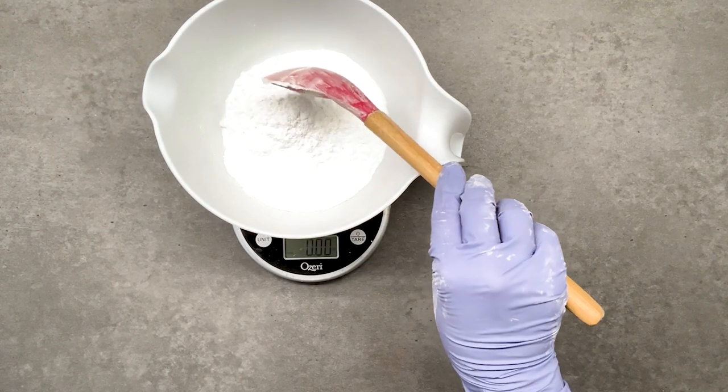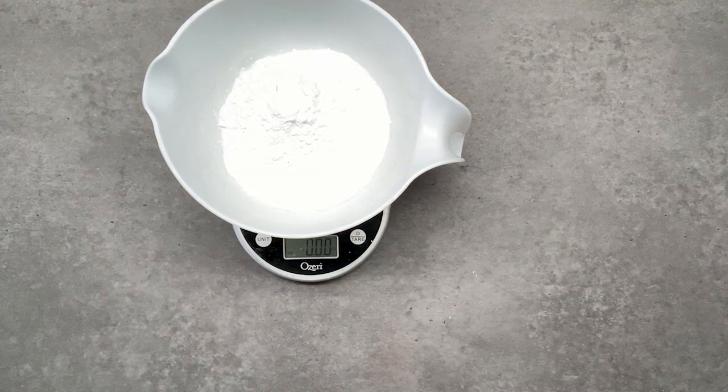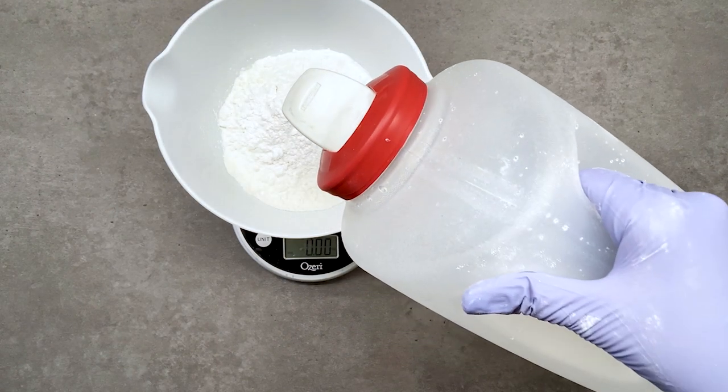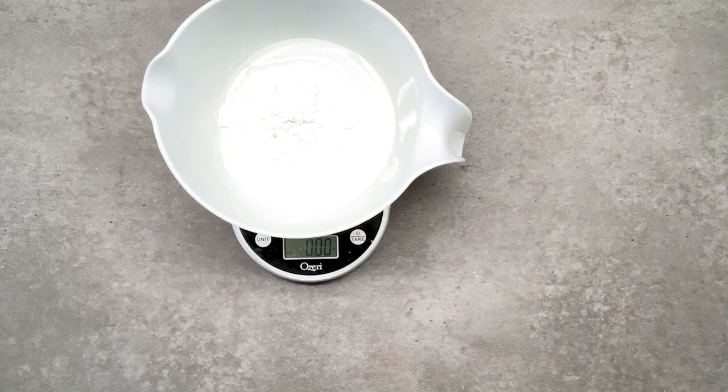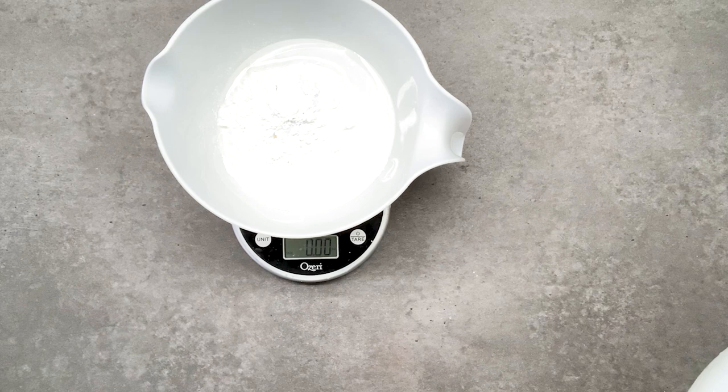Next is two and a half ounces of vegetable glycerin and then one ounce of castor oil.